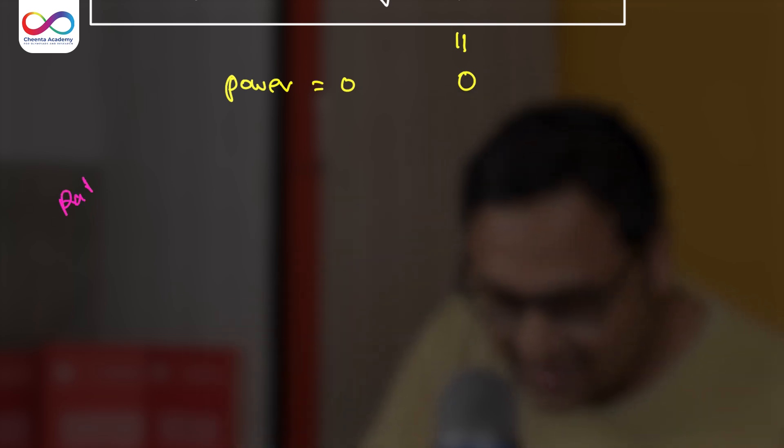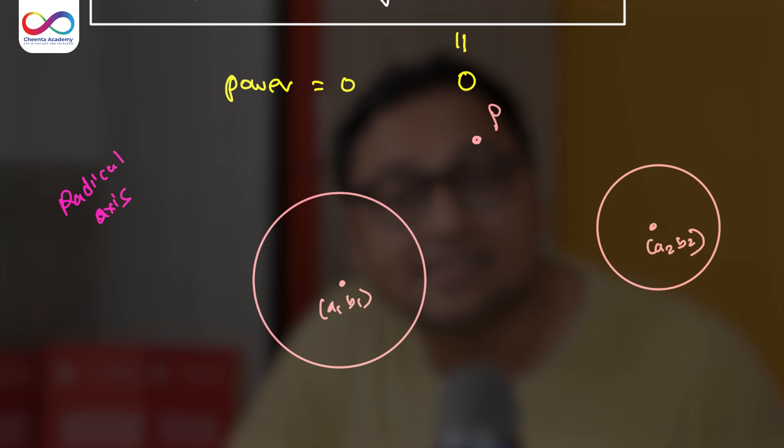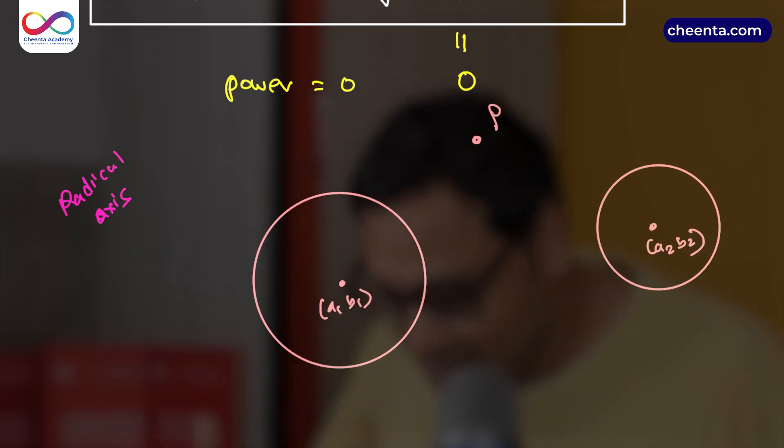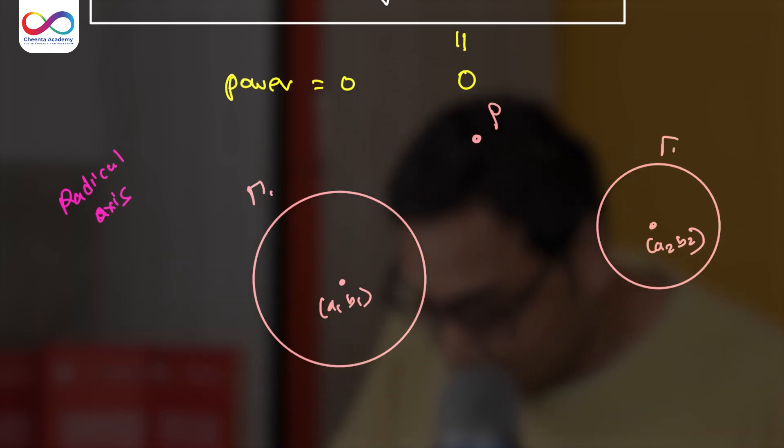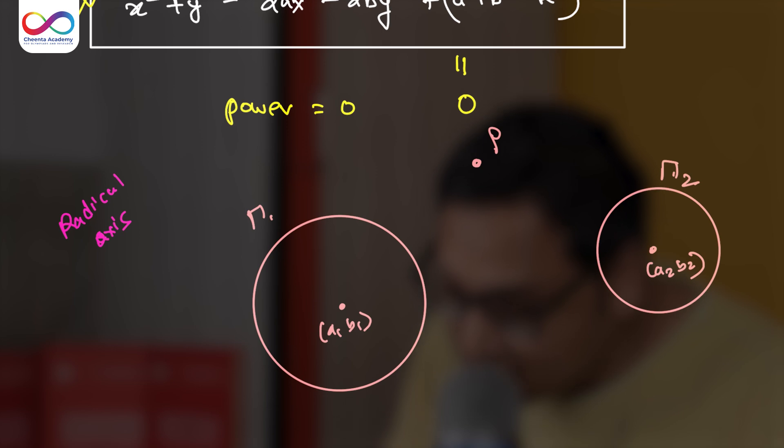Now, the last line of the entire discussion is obviously the radical axis, because that's what we set out to discuss. If we have two circles - the first one with center (a₁,b₁), the second one with center (a₂,b₂) - and suppose we want to find the locus of all points whose powers with respect to the two circles are equal. So with respect to gamma 1 and gamma 2, the powers are equal. If I want that, can you tell me the locus of such a point P? Well, we just use this expression.